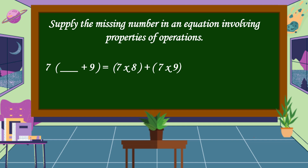Next equation: 7 times (blank plus 9) is equal to (7 times 8) plus (7 times 9). The missing number is 8. This is the distributive property of multiplication over addition. Next equation: 6 plus (2 plus 5) is equal to (6 plus blank) plus 5. The missing number is 2. This is the associative property of addition.